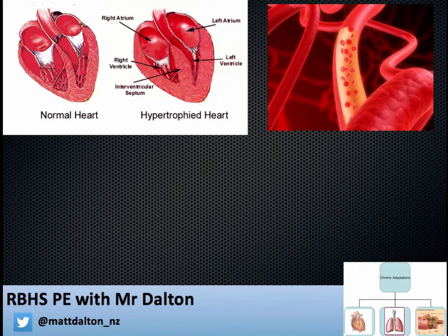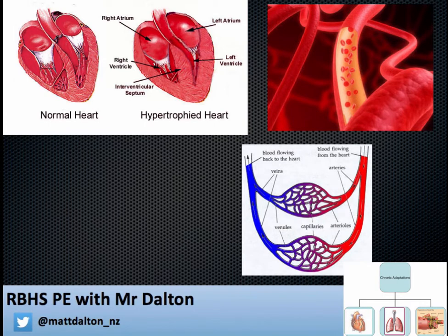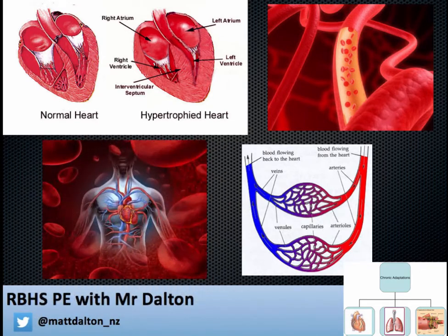The next adaptation is that the number of red blood cells increases, which improves the body's ability to transport oxygen to the muscles. There is also increased capillarization in the muscles and surrounding the heart and lungs, as more branches develop, which allows more efficient gaseous exchange of oxygen and carbon dioxide at these sites.